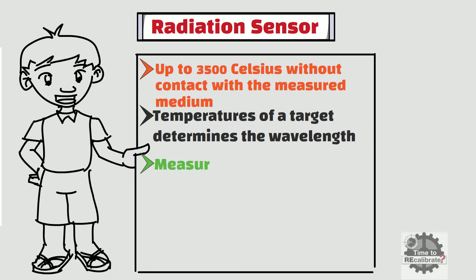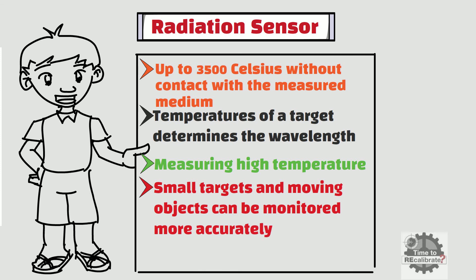Moreover, radiation sensors have their biggest advantage in measuring high temperatures. In addition, small targets and moving objects can be monitored more accurately since IR sensors measure only the energy emitted by the object, not the surrounding area. Lastly, infrared measurements are much faster, allowing several measurements to be made in less than a second.